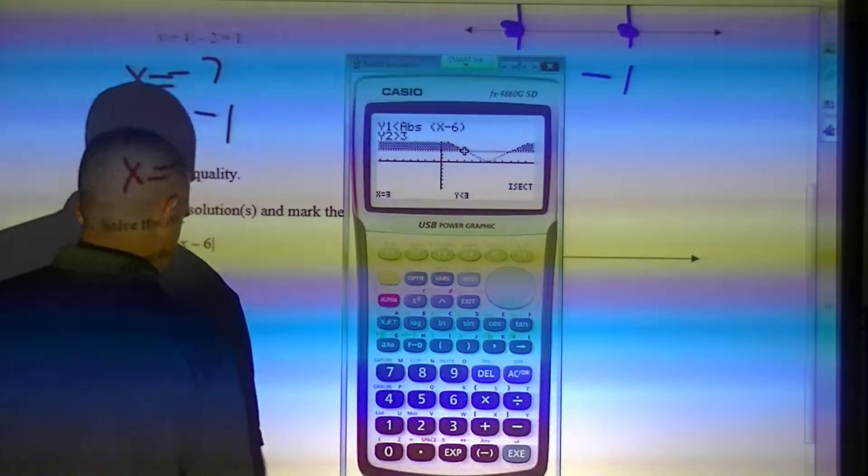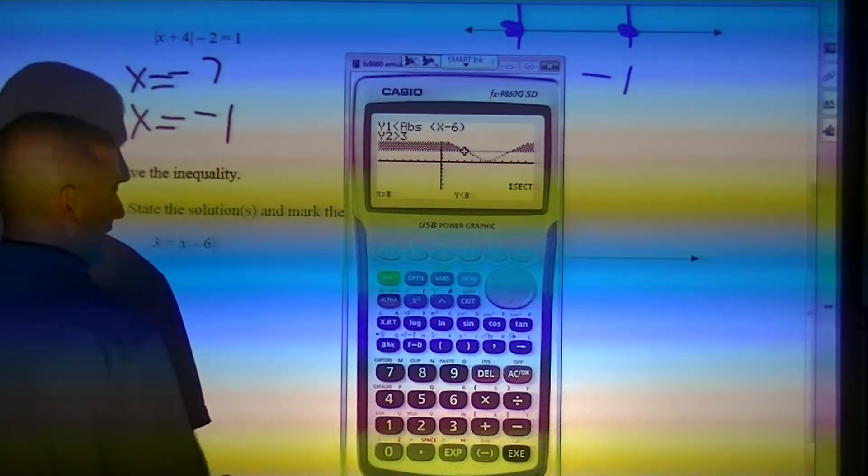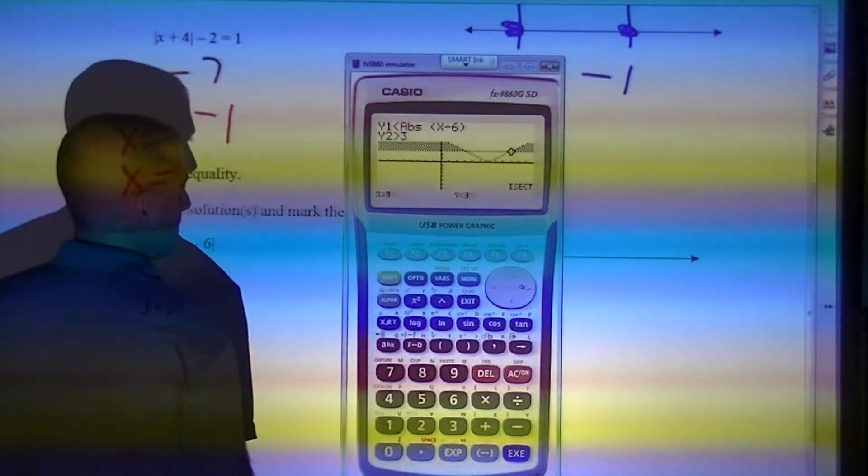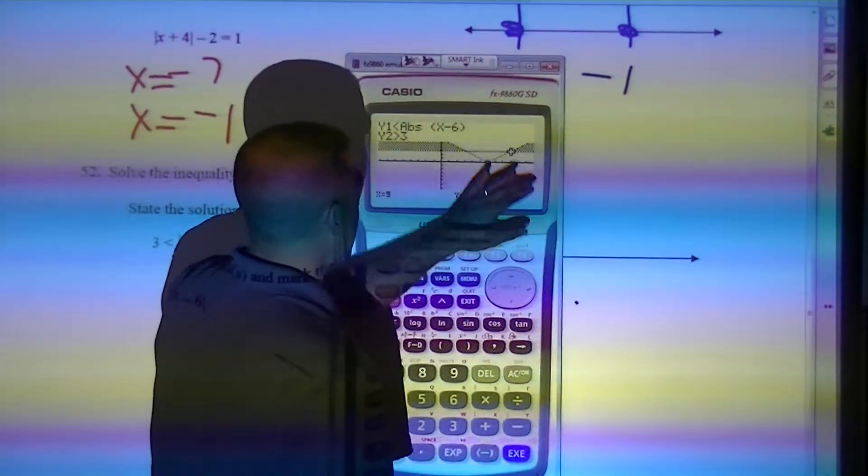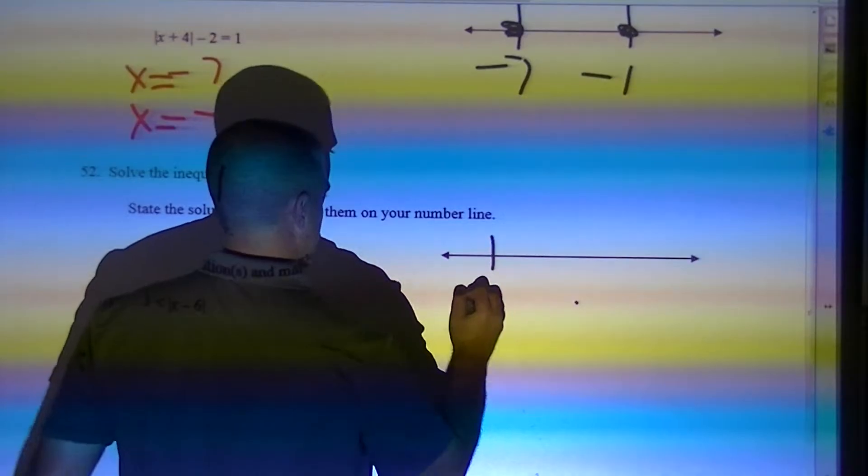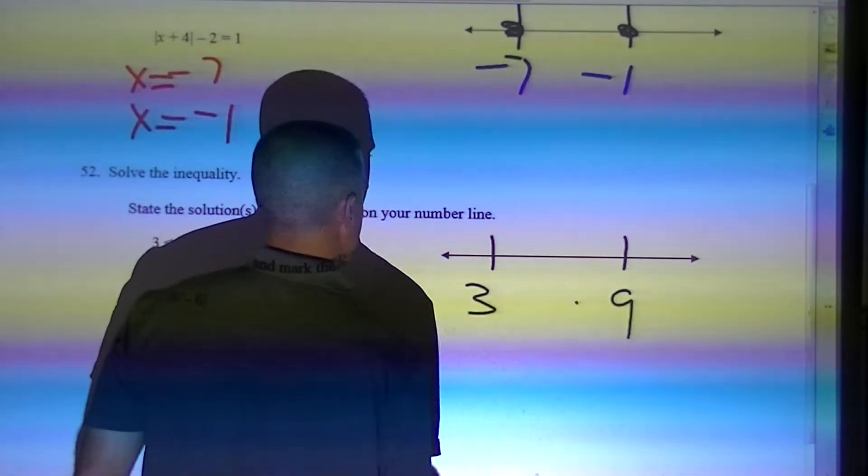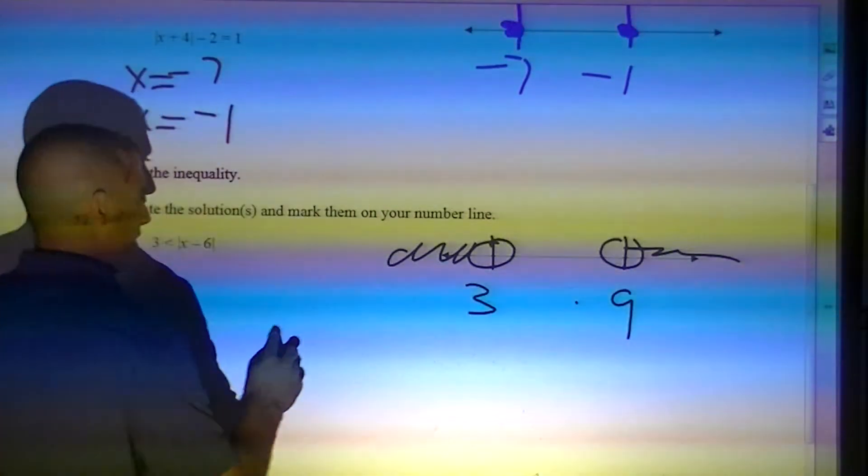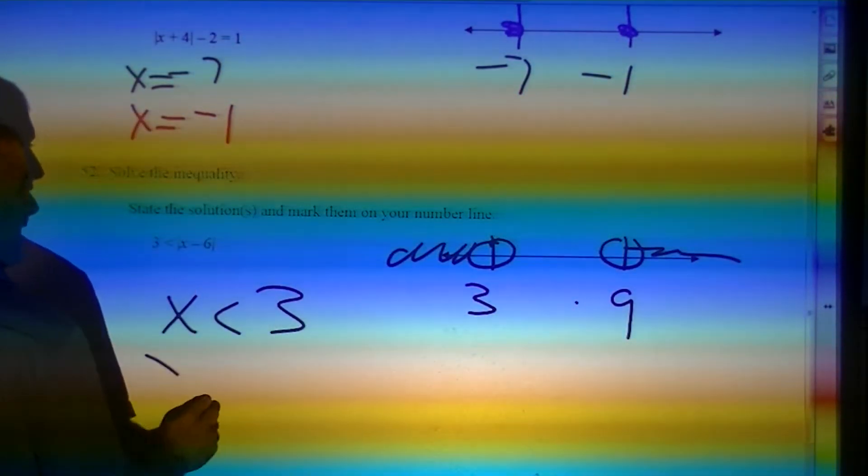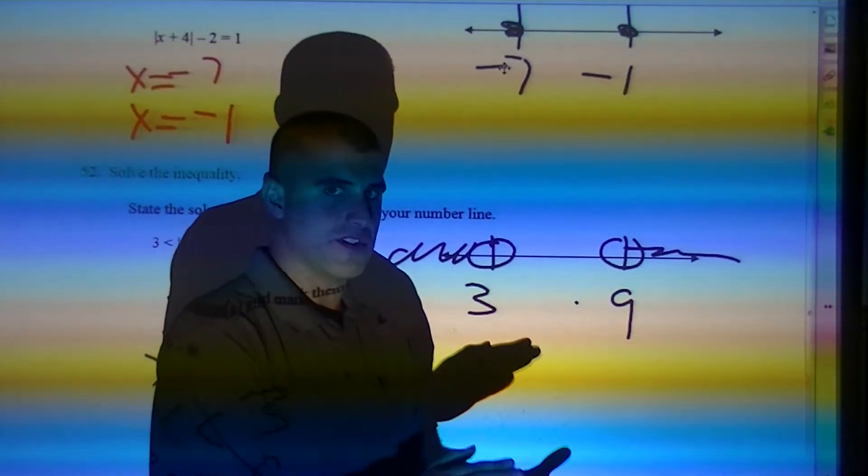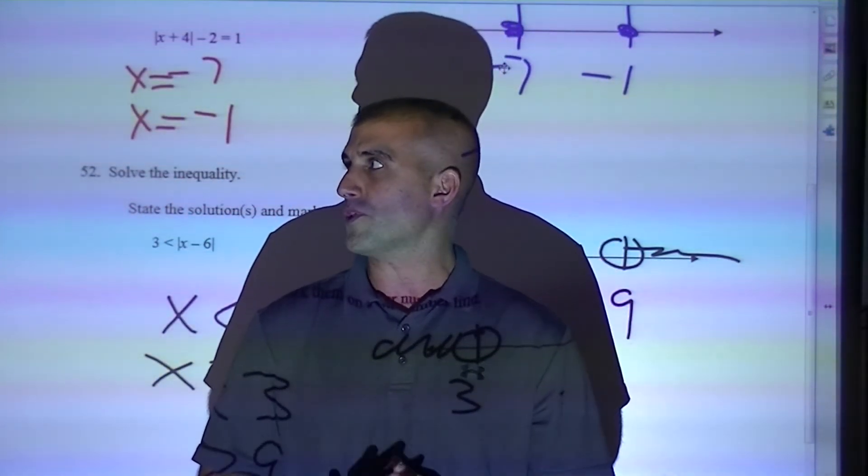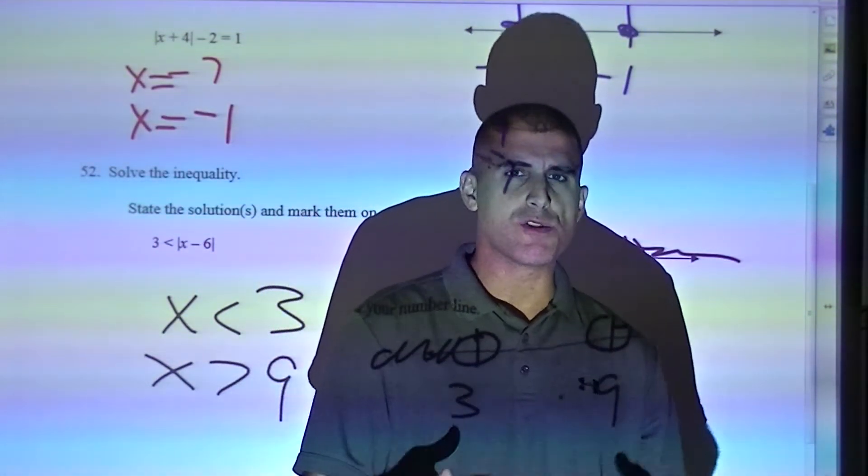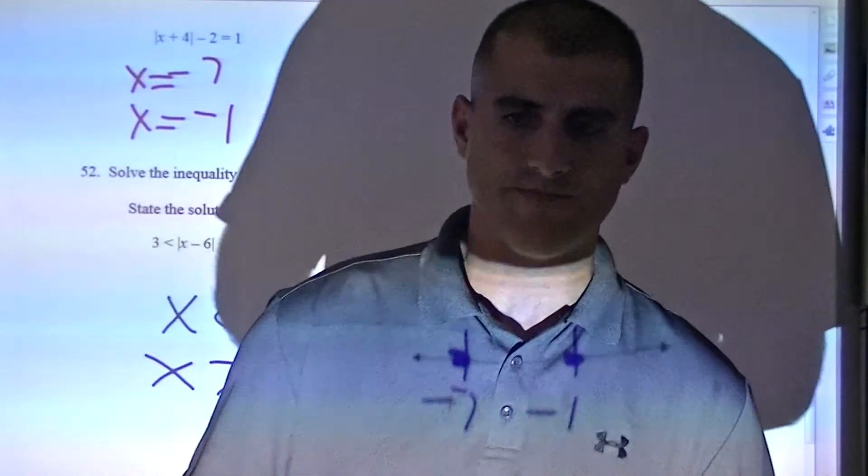G solve, intersect. One answer is 3. And the other answer is 9. And the shading is to the outside. So 3, 9, open circles, outside shading. This would be x is less than 3, x is greater than 9. It goes to the right. That's what you have to do. So make sure this is a long challenge. Make sure you practice. The more you practice, the easier it's going to get.